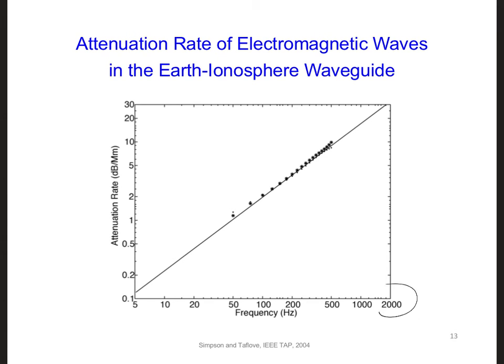Below about 2 kilohertz, only the very basic transverse electromagnetic mode can propagate in the earth-ionosphere waveguide. And if we look even lower than that, the lowest frequencies can propagate with the least amount of attenuation in the waveguide.